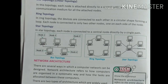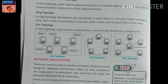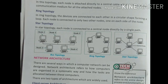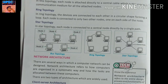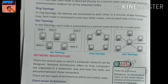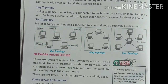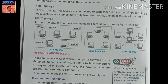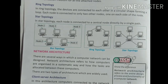In Ring Topology, devices are connected to each other in a circular shape, forming a loop. Each node is connected to only two other nodes — one on each side. So each computer stays connected to its left and right neighbors, forming a loop, as shown in the figure.